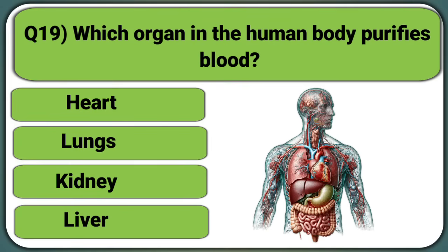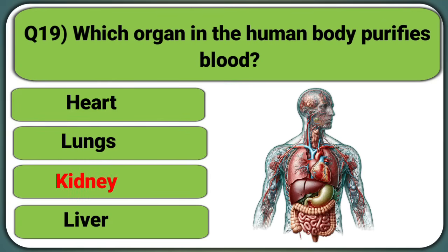Which organ in the human body purifies blood? Heart, Lungs, Kidney, or Liver. Answer: Kidney.